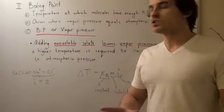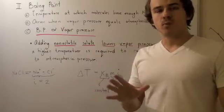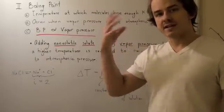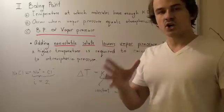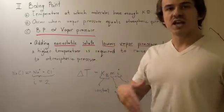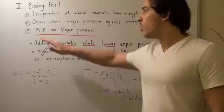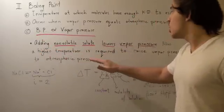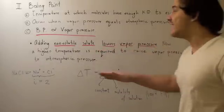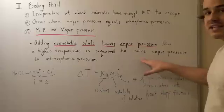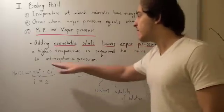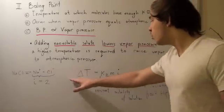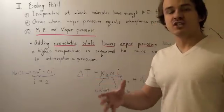The second colligative property is the boiling point — the temperature at which the liquid molecules have enough kinetic energy to escape into the gas state. This occurs when the vapor pressure of the liquid equals the atmospheric pressure, so the boiling point is related to vapor pressure. Adding a nonvolatile solute lowers vapor pressure, and now a higher temperature is required to raise the vapor pressure to that final atmospheric pressure, so more energy is required. We can use a formula to find the change in boiling point.